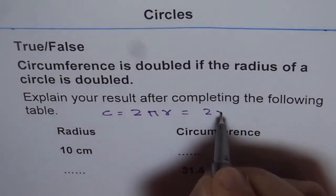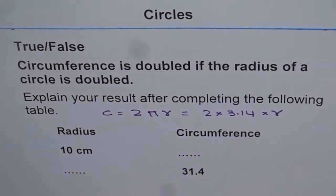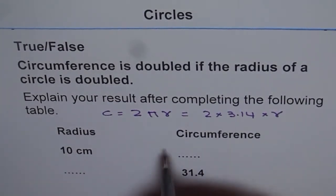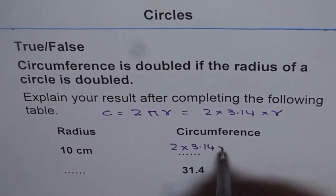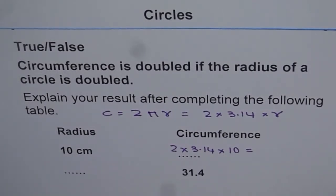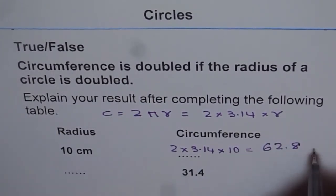So, it is 2 times 3.14 times radius. Now, if radius is 10 centimeter, then circumference will be 2 times 3.14 times 10. And let us use calculator to calculate this value. So, it is 2 times 3.14 times 10. And this gives us 62.8. And the units are centimeter.